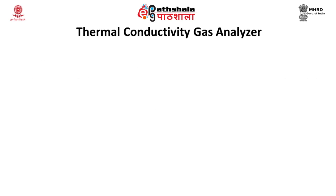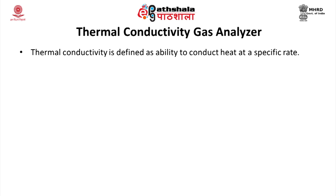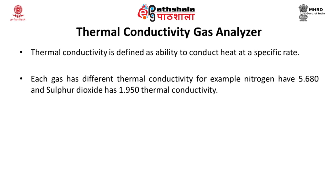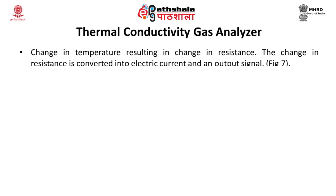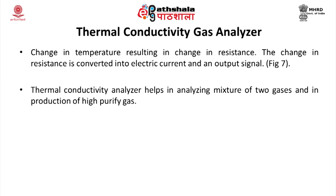Thermal conductivity is defined as the ability to conduct heat at a specific rate. Each gas has a different thermal conductivity — for example, nitrogen has 5.680 and sulfur dioxide has 1.950. The zero and sample gas are passed onto a heated metal filament. The amount of heat carried away by the gas changes the rate of cooling of the filament wire, causing a change in temperature and a resulting change in resistance. This change in resistance is converted into an electrical signal or current as an output signal. Thermal conductivity analyzers help in analyzing mixtures of two gases and in the production of high-purity gases.